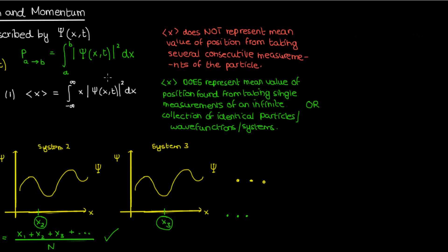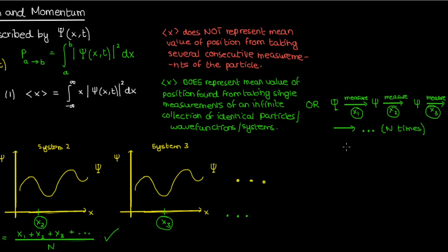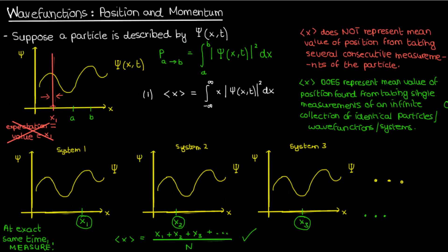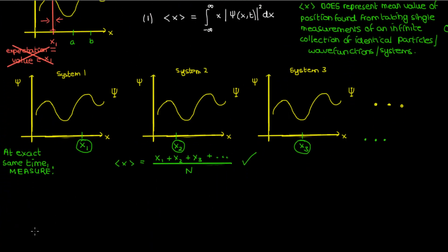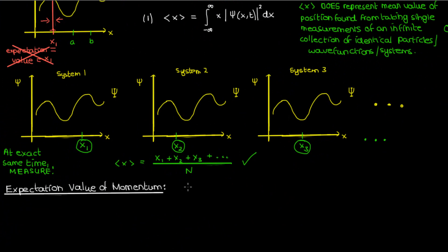We could also find the expectation value by taking repeated measurements on only one system, but instead of taking repeated measurements while the wave function is collapsed, we could return the system to its original wave function between each measurement and then average those measurements. It's functionally the same idea as taking measurements of an infinite collection of identical particles. Now that I've explained the meaning of the expectation value of x, let's talk about the expectation value of p, or the momentum of the particle. Interestingly, we can actually derive this from the expectation value of x, so let's go over it.